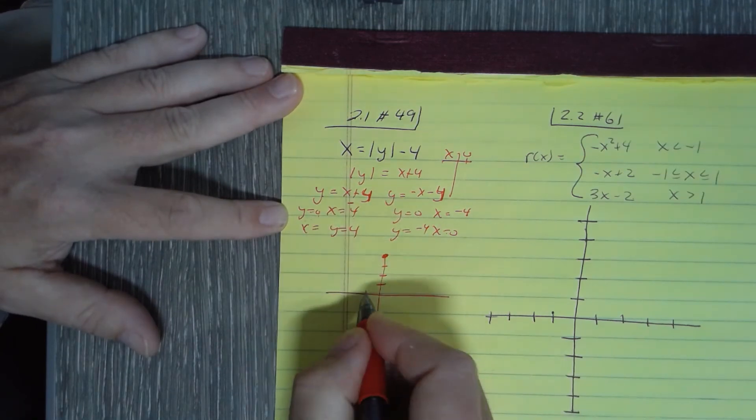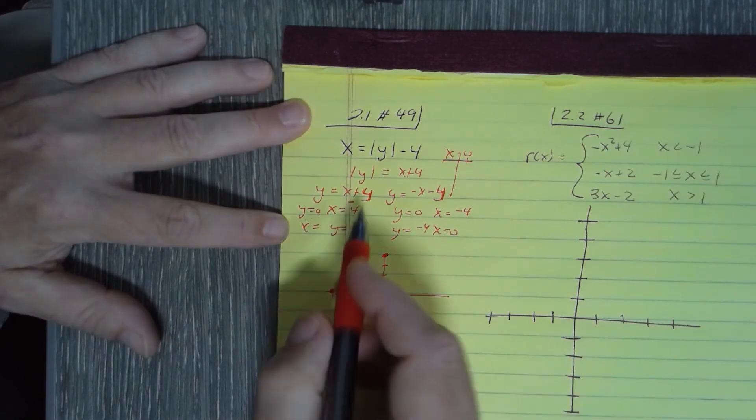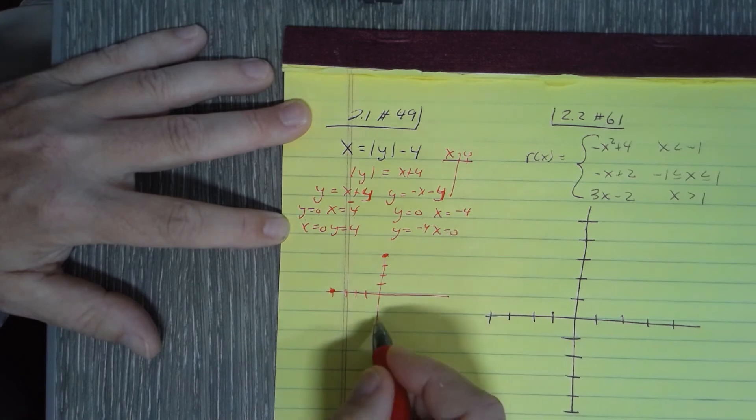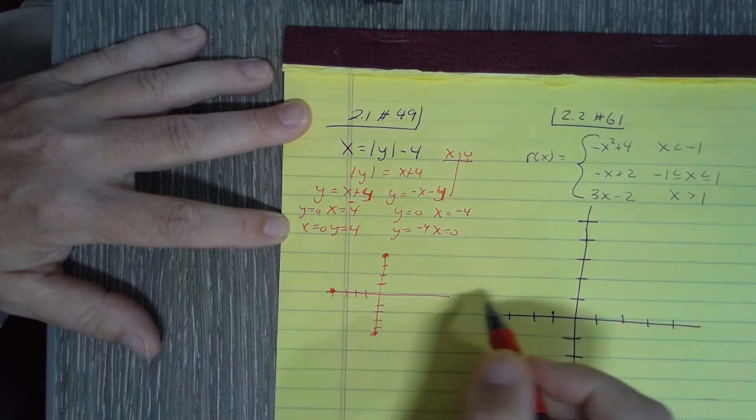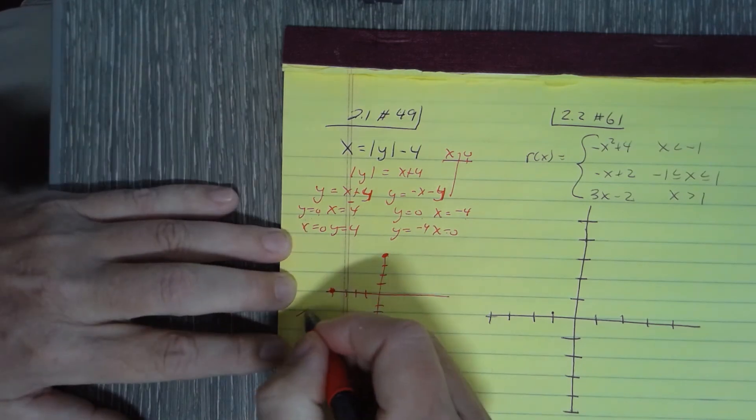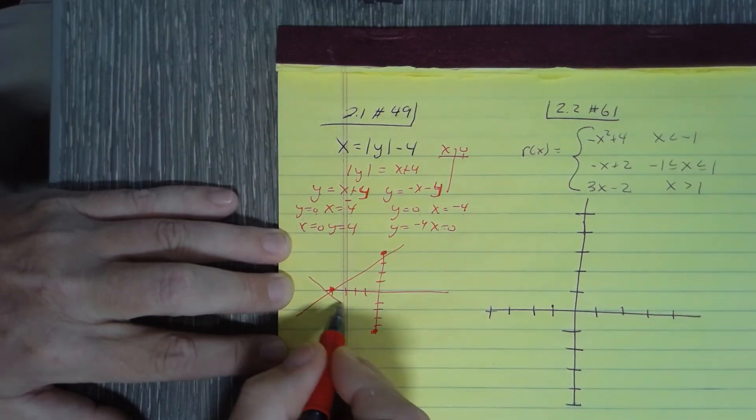So (0, -4) there we go, and x is zero and y is 4, so I've got those two, and I've got (0, -4) and (-4, 0). So it looks like this. Now generally the graph starts and goes like that.